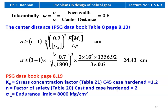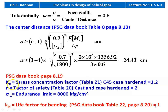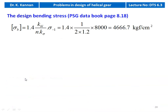For calculating the design bending stress, we take Kσ = 1.2 from data book page 8.17, table 21; factor of safety n = 2 from table 20; endurance limit stress σ₋₁ = 8000 kgf/cm²; and life factor for bending KBL = 1. Design bending stress equation from page 8.18: σB = 1.4 × KBL / n × Kσ × σ₋₁ = 1.4 × 1 / 2 × 1.2 × 8000 = 4666.7 kgf/cm².